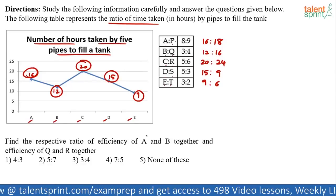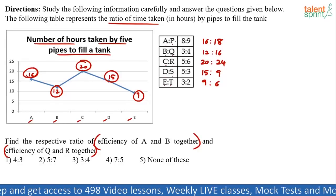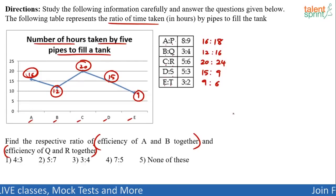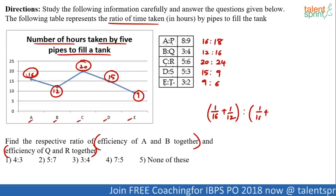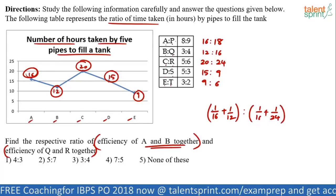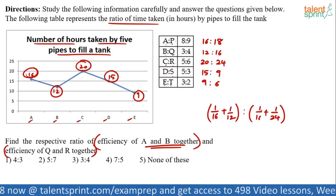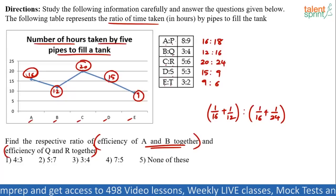Now, look at the questions. Find the respective ratio of efficiency of A and B together and efficiency of Q and R together. What do you mean by efficiency? Efficiency is nothing but capacity. What is the capacity of A and B together? See, A's capacity is 1 by 16. B's capacity is 1 by 12. These two capacities of Q and R together. What is Q's capacity? 1 by 16. What is R's capacity? 1 by 24. You understand? The ratio of their capacities. The capacity of A and B together. A's capacity is 1 by 16. B's capacity is 1 by 12. Together is 1 by 16 plus 1 by 12. Q and R. Q's capacity is 1 by 16. R's capacity is 1 by 24. So, total capacity together is 1 by 16 plus 1 by 24. You have to get this ratio to get the answer.